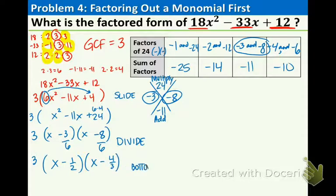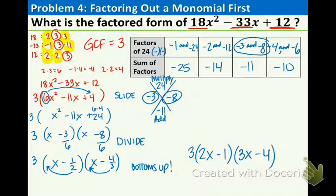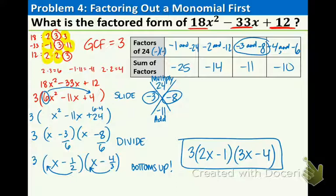Very last step, bottoms up. Draw an arrow, draw an arrow. I'm going to rewrite this on the right side. 3 is in front, the 2x minus 1, and then 3x minus 4. That completes this example. The factored form of the original trinomial is 3 times the quantity 2x minus 1 times the quantity 3x minus 4.